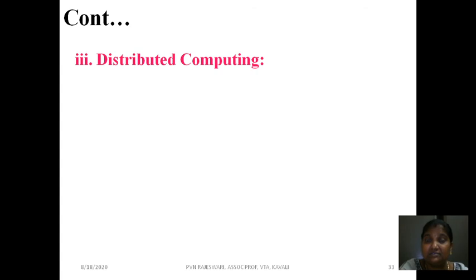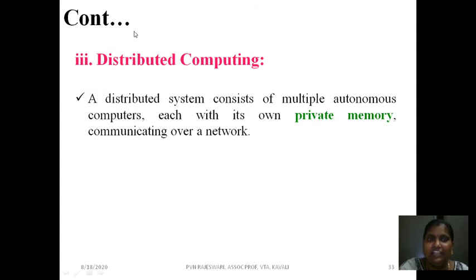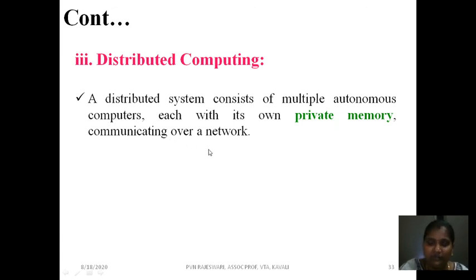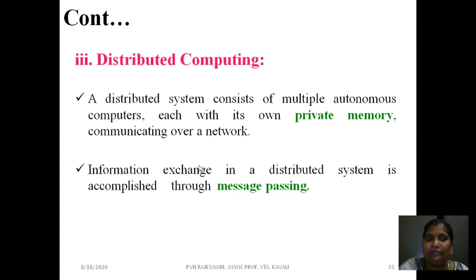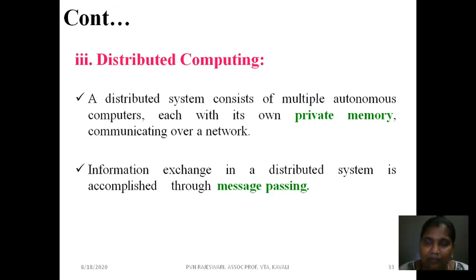Distributed computing: multiple systems are distributed across the world and can share memory. A distributed system consists of multiple autonomous computers, each with its own private memory, communicating over a network. Information exchange in distributed computing is done with the help of message passing — using a client-server methodology called message passing.